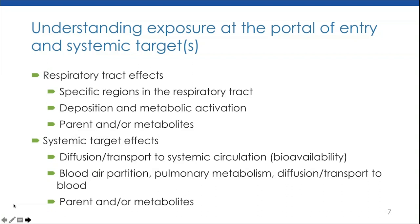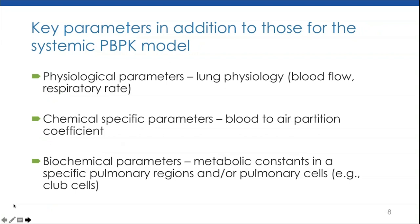Both parent compound and metabolites can be responsible for the systemic effect of the inhaled agent. Therefore, the key parameters for an inhalation PBPK model, in addition to those for the systemic PBPK model, include physiological parameters of lung physiology — especially blood flow and ventilation rate — and chemical-specific parameters such as the blood-to-air partition coefficient, as well as biochemical parameters: the metabolic constants in specific pulmonary regions and pulmonary cells, for example club cells for metabolic activation of some inhaled agents. These parameters determine the respiratory tract exposure as well as the systemic bioavailability.